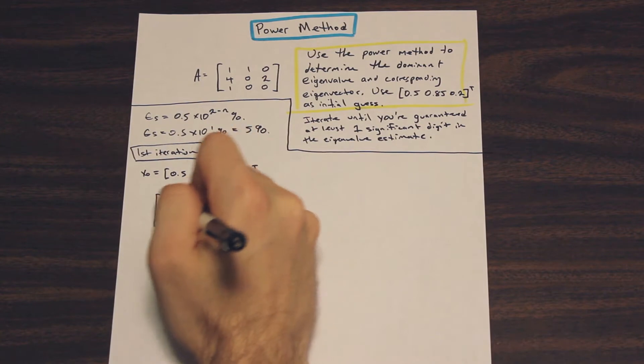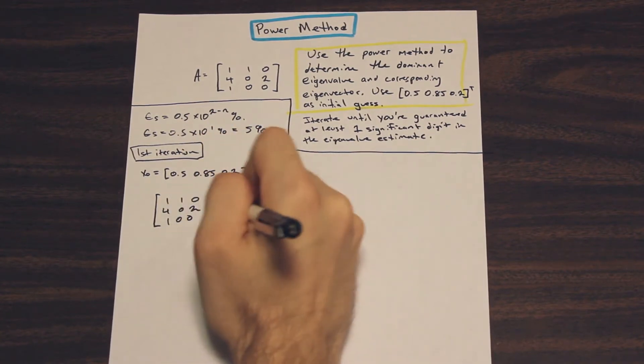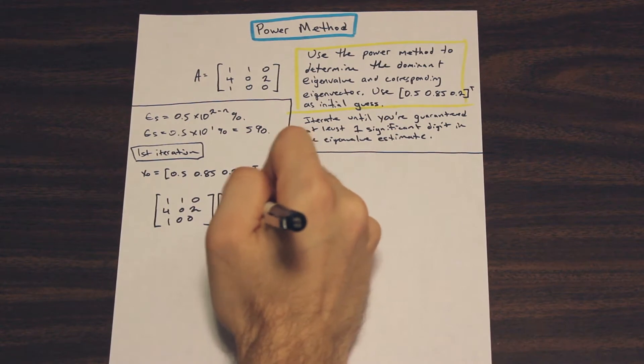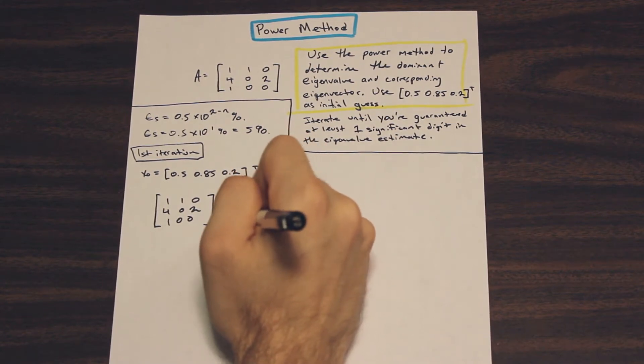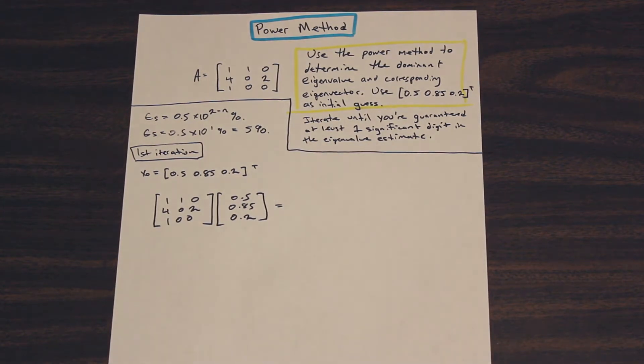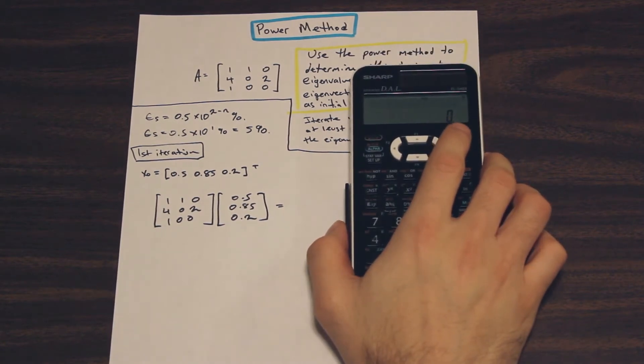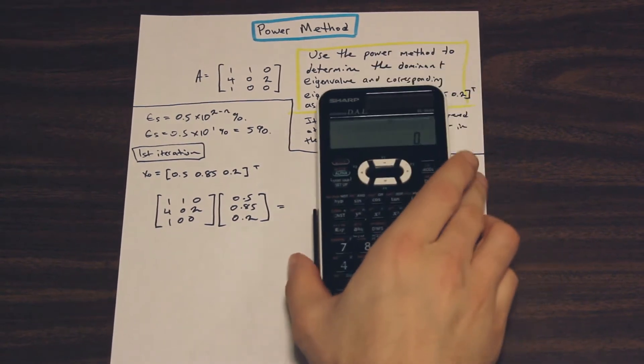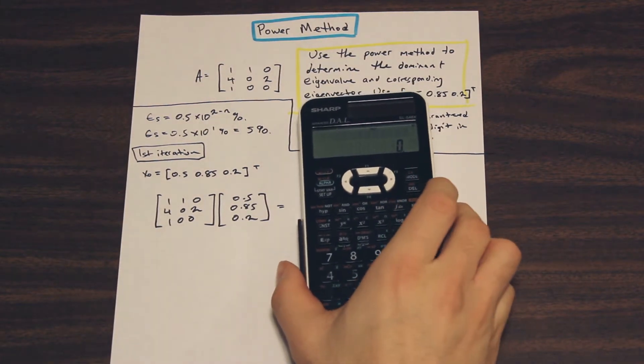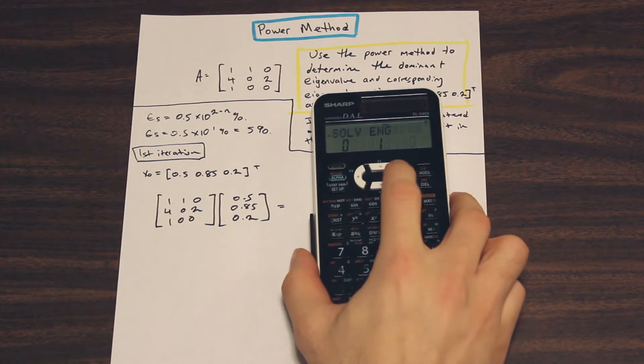So x0, which is going to represent our initial guess, is given to us as, for the eigenvector, is 0.5, 0.85, 0.2 transpose. So all we need to do in this case is we just need to multiply this matrix by this, and that's going to be the first step towards our first iteration. So we're going to start with that. We'll just rewrite the matrix here for 0, 2, 1, 0, 0, 0.5, 0.85, 0.2.